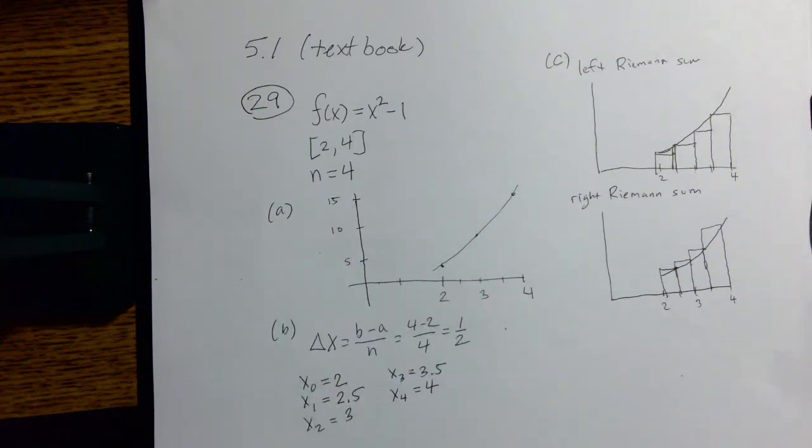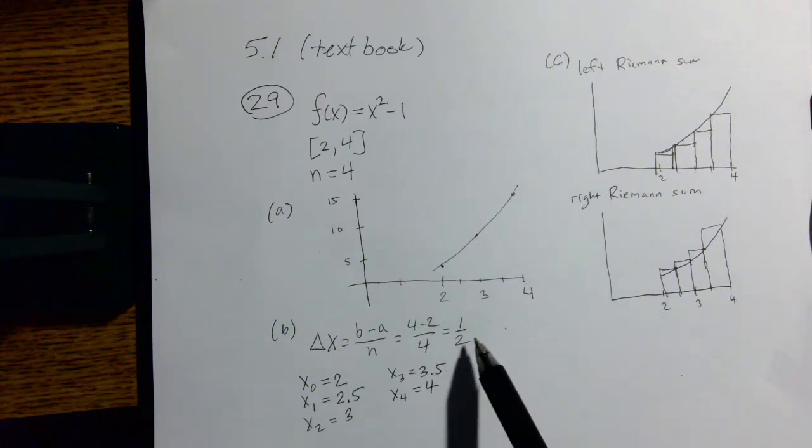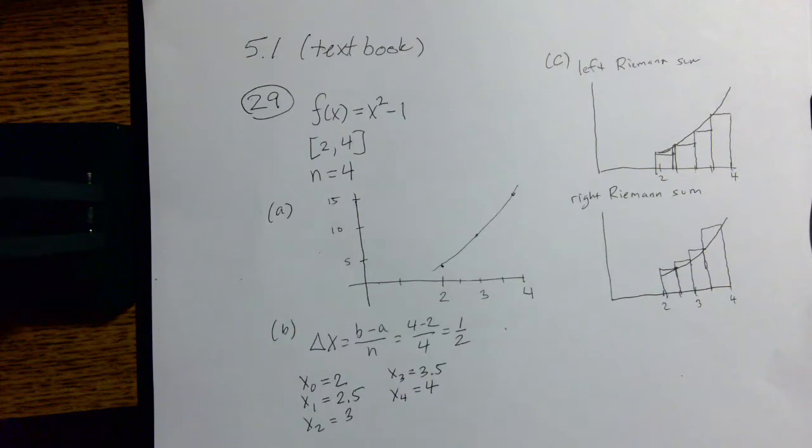Part B asks us to find the width of each sub-interval. That's going to tell us how wide these rectangles are that we use in the process of these Riemann sums. So if we take the length of the interval divided by the number of sub-intervals we get one half. That's going to be how wide each sub-interval is, Δx = (b-a)/n = (4-2)/4 = 1/2.